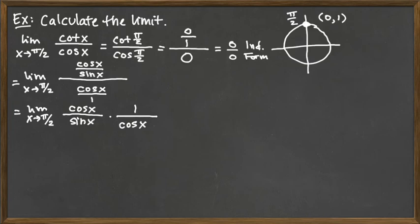Now notice we have a cosine of X factor on the top and the bottom that are going to cancel with each other. So we are looking at the limit as X goes to π/2 of just 1 over sine of X.